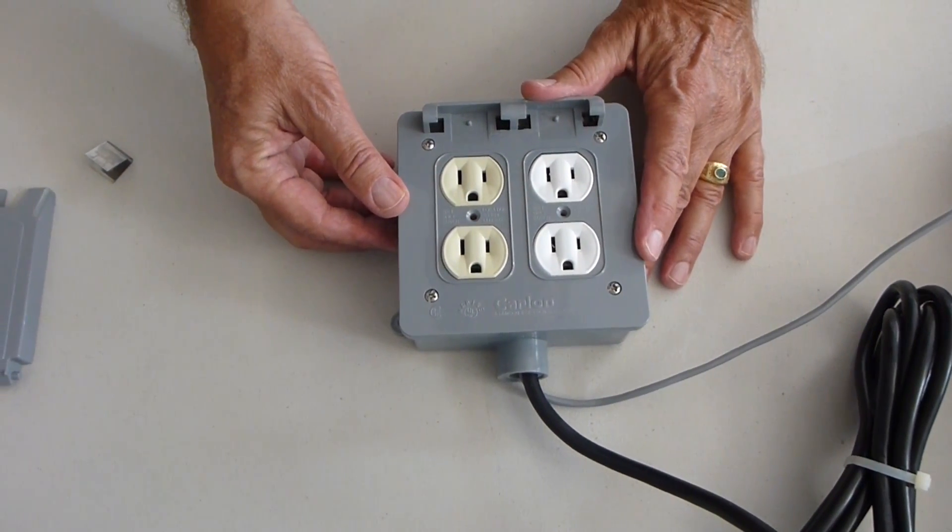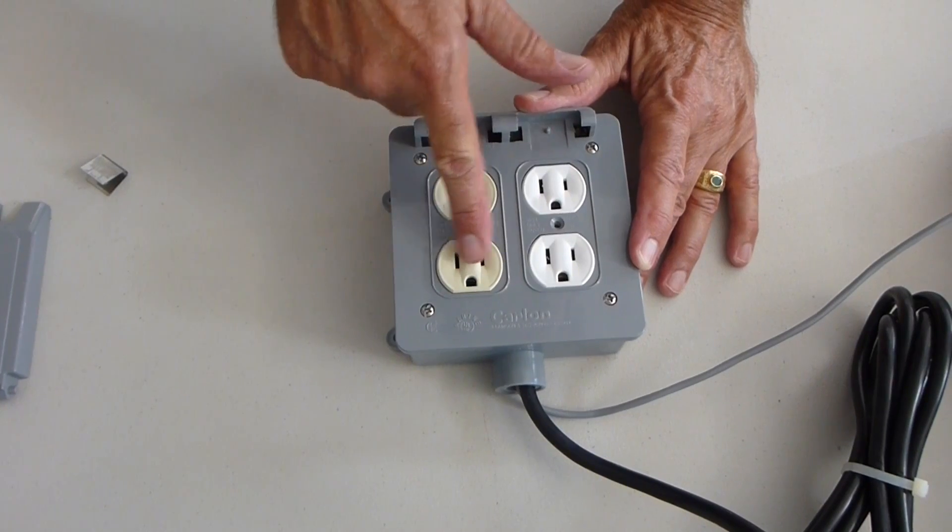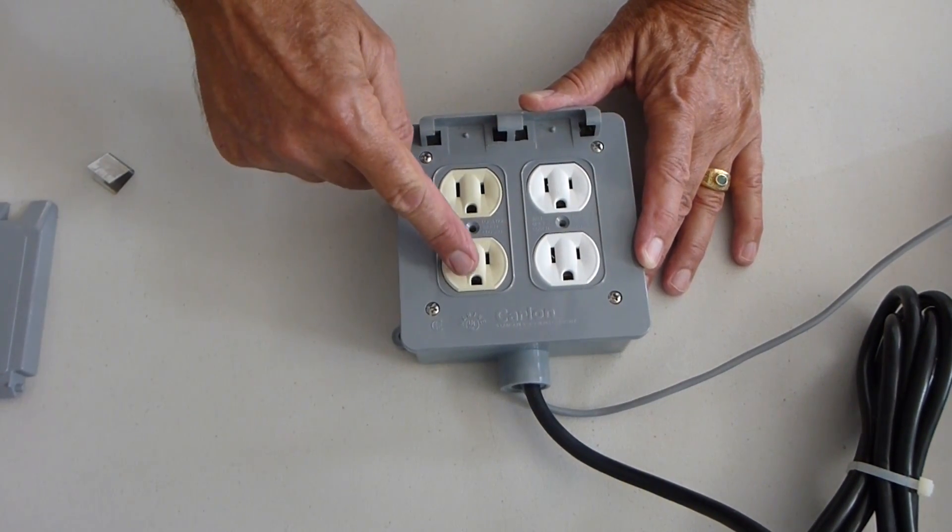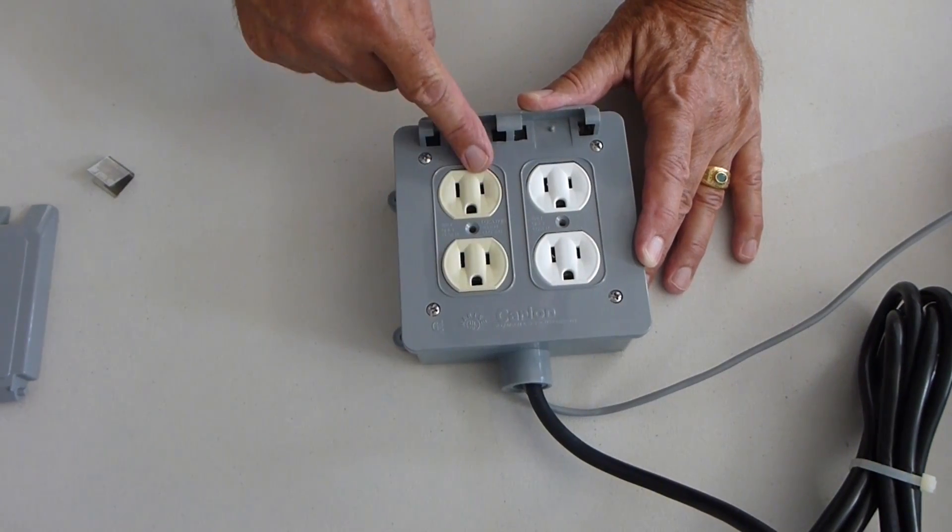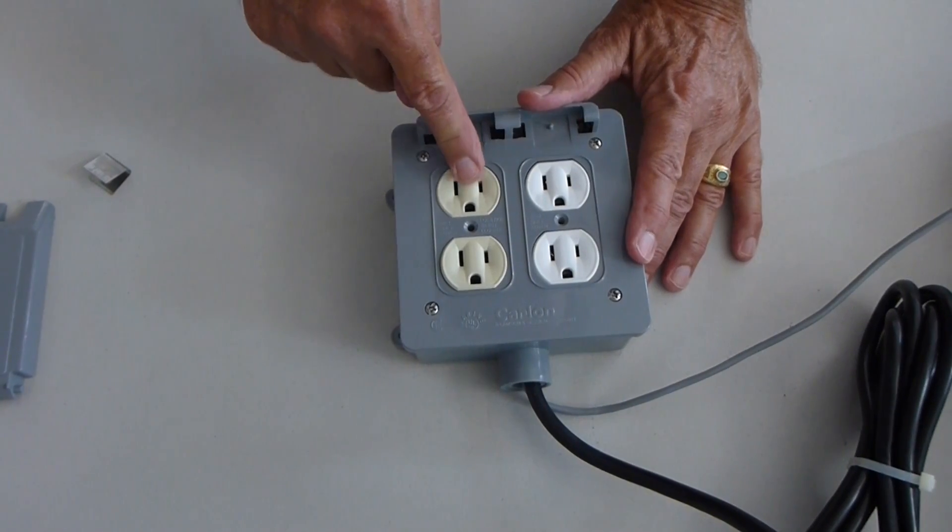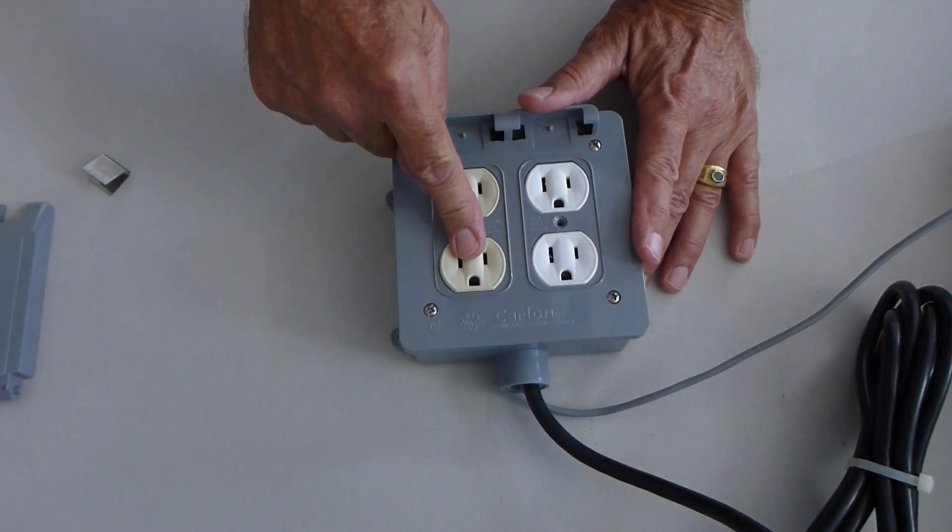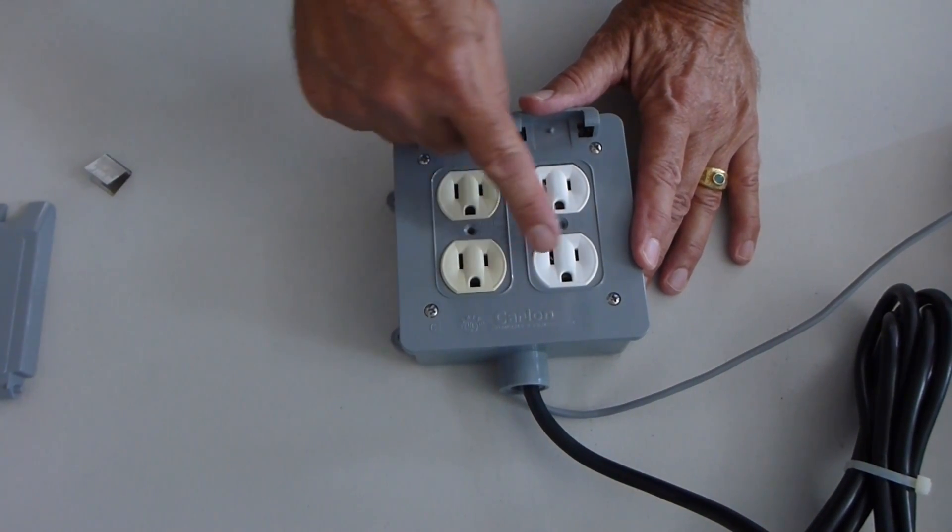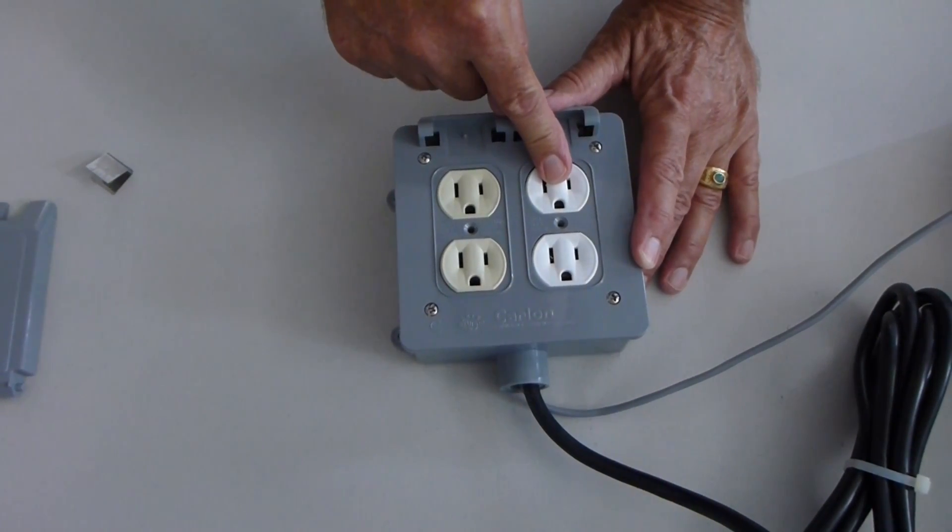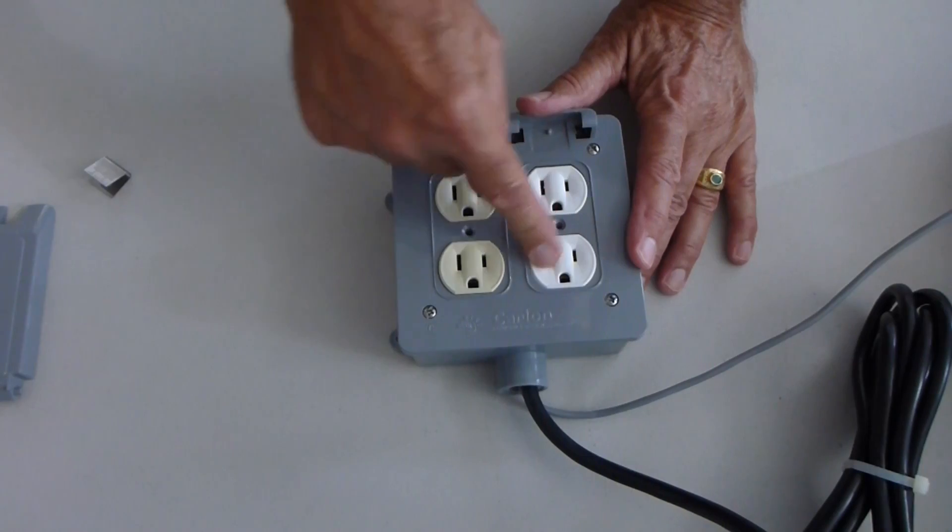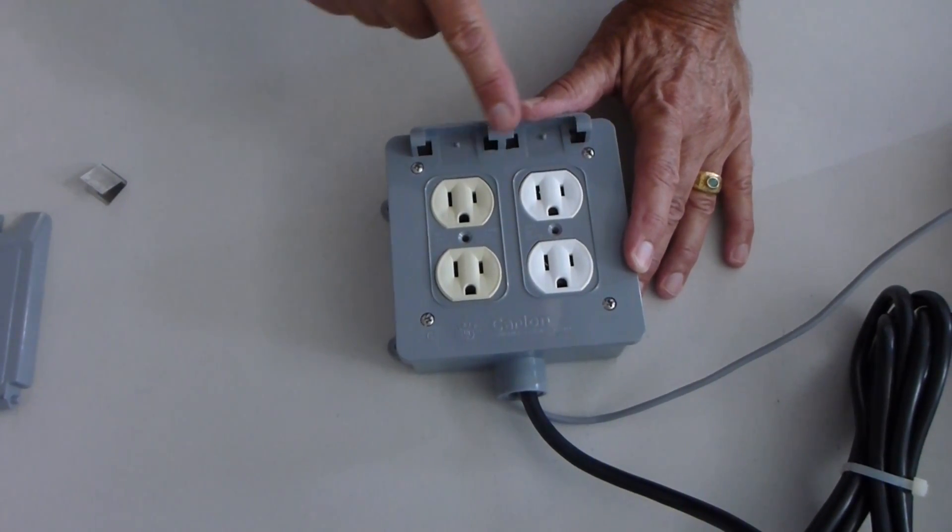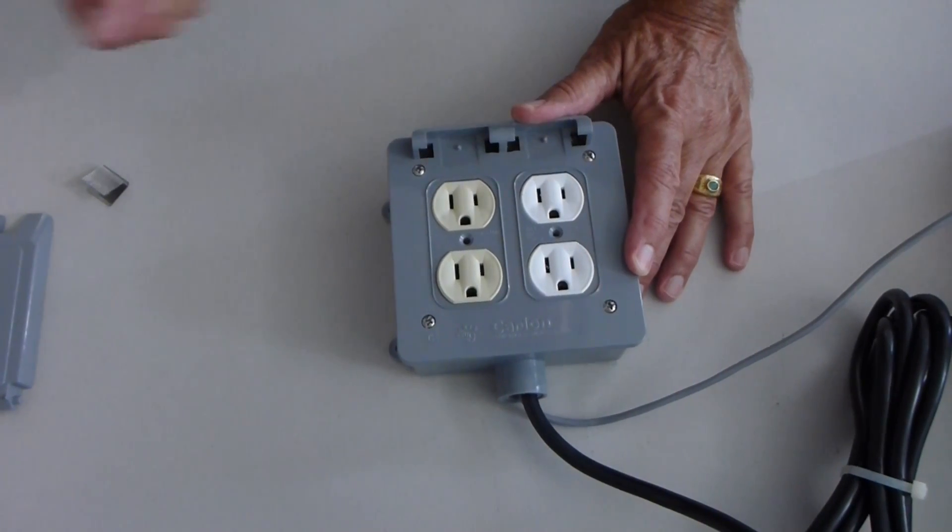On your flow switch control box, you notice that you have two different colors for your duplex receptacles. The duplex receptacles that are on the left are the switched receptacles. These are the ones that control your pump. The receptacles that are on the right are constant. So you're going to be plugging your filter in and you're going to be plugging your softener in if that's what you're using in the system.